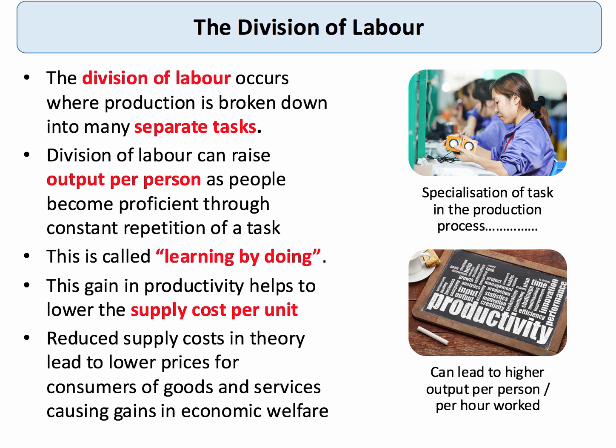The division of labour is when production of a good or a service is broken down into many separate individualized tasks that are then linked together. One of the aims of this is to increase output per person over time, because people who repeat the same tasks become more proficient through constant repetition.